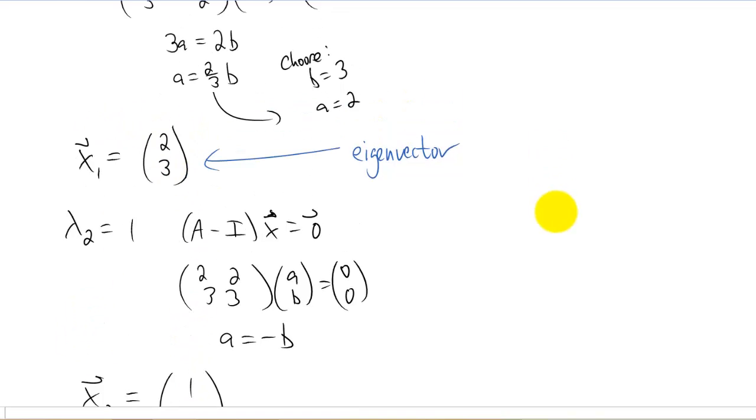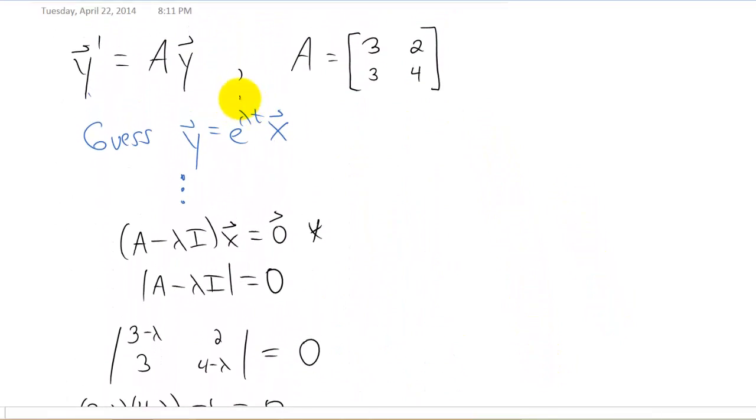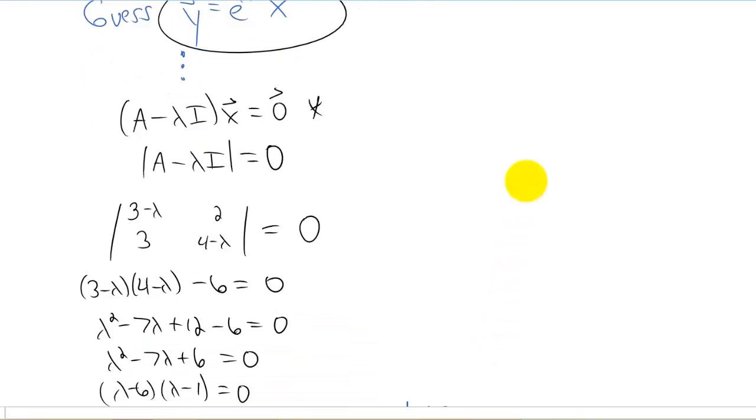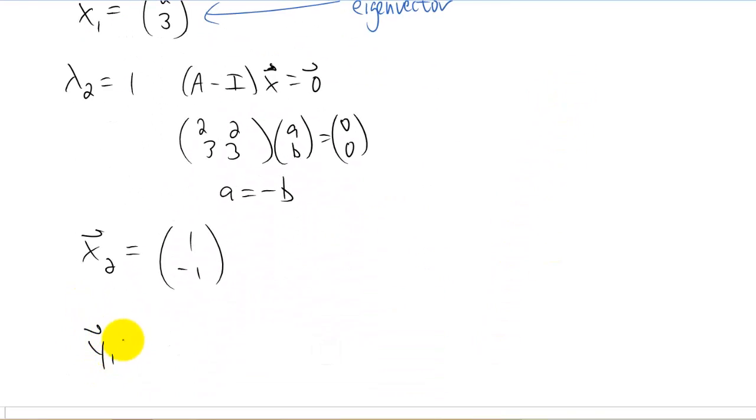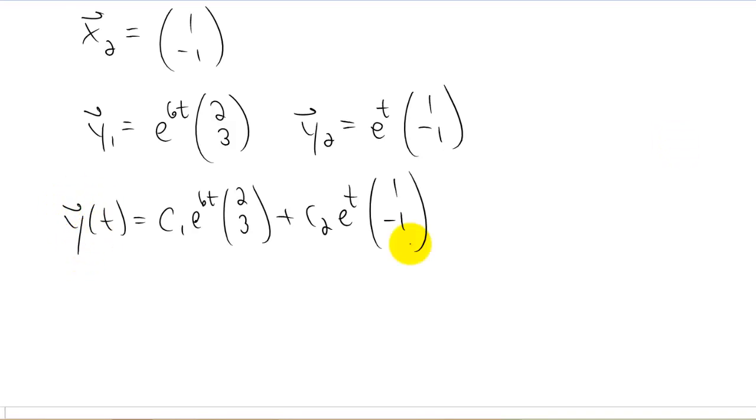Now that we have our eigenvectors, our x values, and our lambda values, our eigenvalues, we can go back up and kind of look at what we just did. Our original guess was that right there. So now we have two solutions to the system of differential equations. We have y1 is going to be e to the 6t, that was our first eigenvalue, times our first eigenvector, which I believe was 2, 3. Our second solution to our system of differential equations is e to the t, 1, negative 1. Now if you're looking for a general solution to the system of differential equations, you just combine your y1 and your y2 and linear combinations here, and you have yourself a general solution to that system of differential equations.